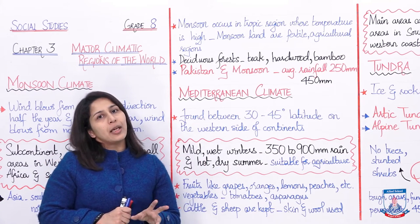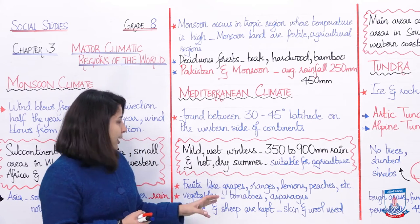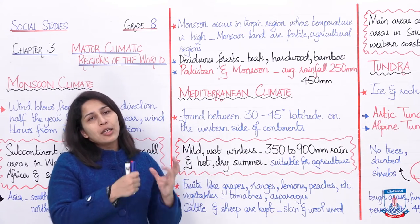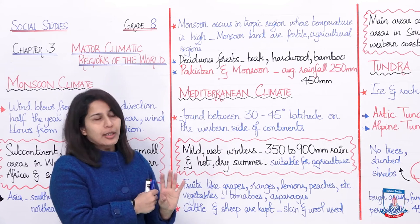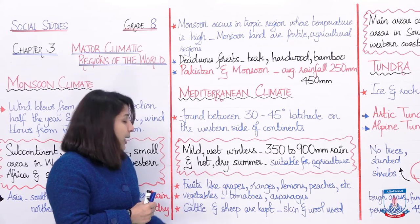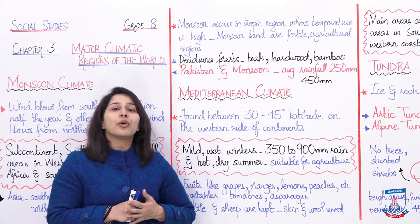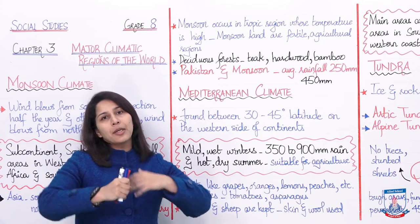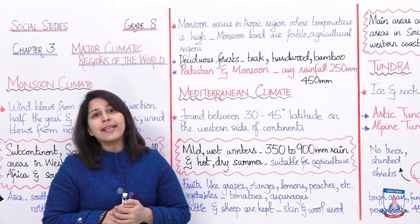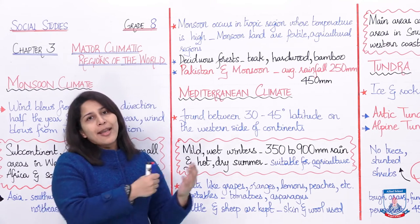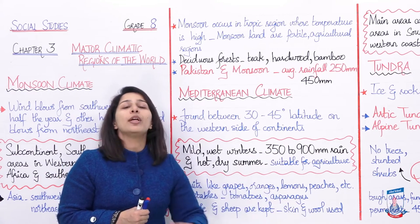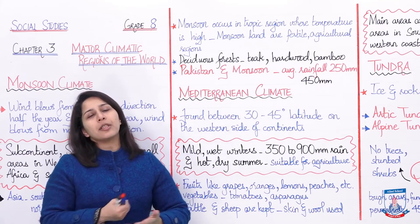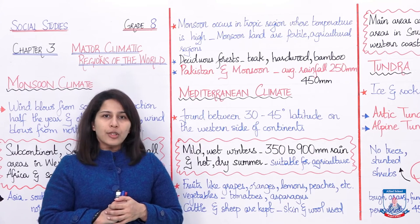Mediterranean climate ko one of the most favorite climates bhi kaha jaata hai — kyunki isme jo fruits and vegetables grow kiye jaate hain, like grapes, oranges, lemons, peaches, apricots — yeh sare phal un regions mein grow kiye jaate hain. Vegetables mein tomatoes and asparagus. Animals like cattle and sheep are also kept, but at higher elevations where soil is less fertile, so grazing hoti hai aur agriculture bhi affect na ho.